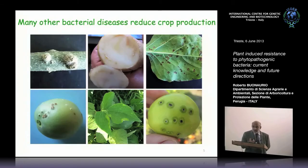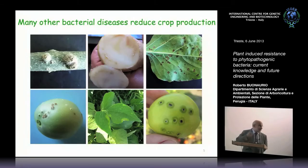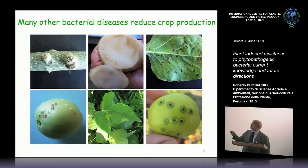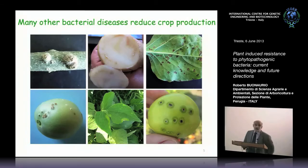Many other bacterial diseases reduce crop production. Symptoms can appear on leaves — leaf spot, bacterial spot — or as soft rot disease. Ralstonia solanacearum causes wilting, and in potato you can also have soft rot. There is also crown gall disease with tumor formation, and many other diseases that reduce crop production each year.